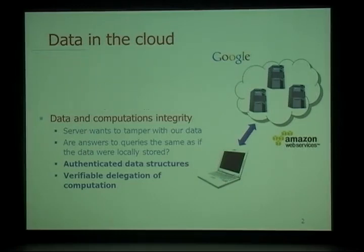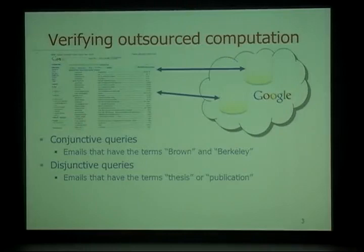The main difference between these two paradigms is that authenticated data structures allow someone to publicly verify some computation, whereas the verifiable delegation of computation framework involves a secret key setting, which inherently supports one specific user. This talk is not going to be about privacy, but about checking the integrity of computations that occur remotely — specifically, verifying outsourced computation in the authenticated data structures model.